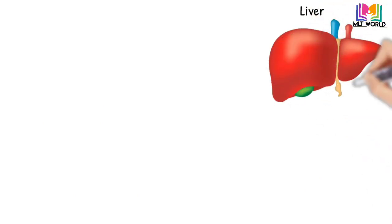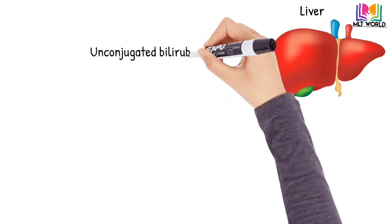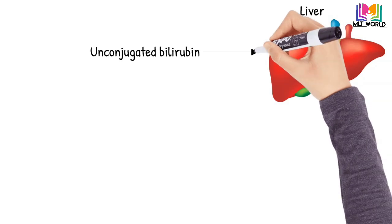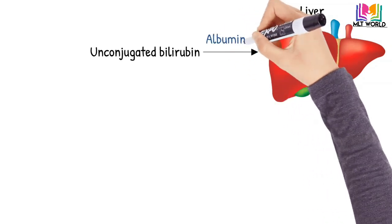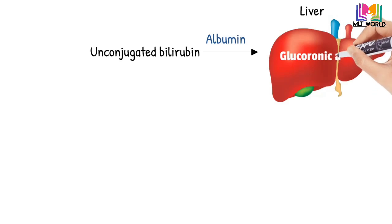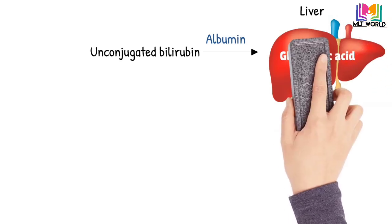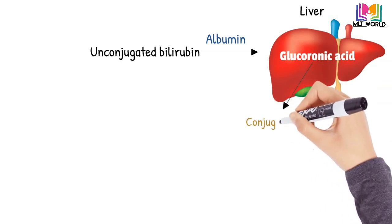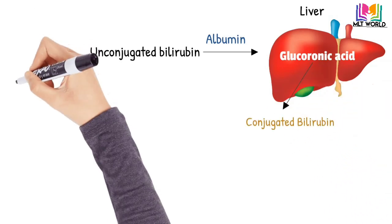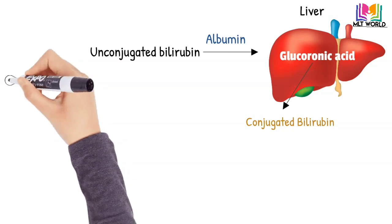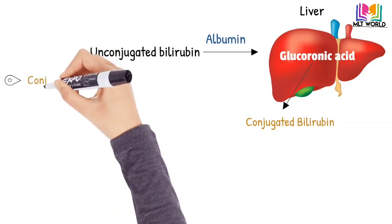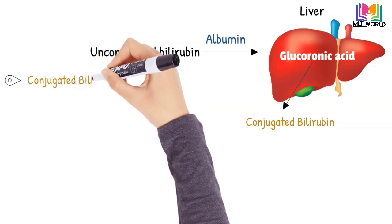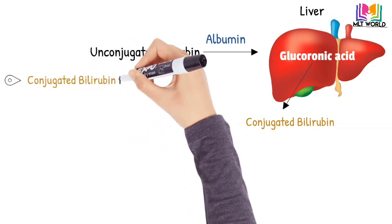From the point when bilirubin is formed, metabolism has started. When unconjugated bilirubin enters the liver with the help of albumin, it combines with a compound called glucuronic acid and converts into conjugated bilirubin. An important point: conjugated bilirubin is the water-soluble form of bilirubin, formed through combination with glucuronic acid.